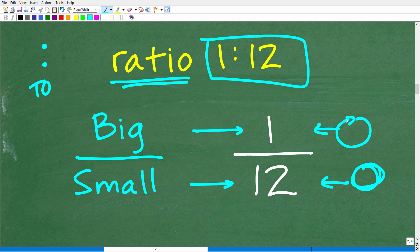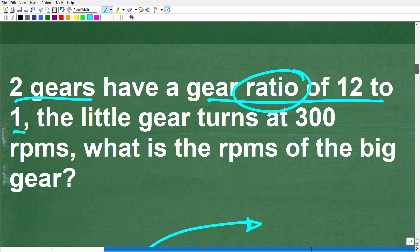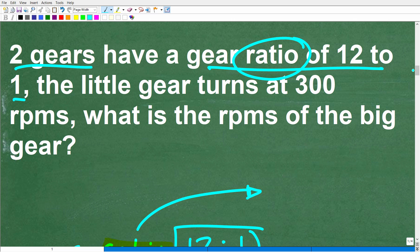Now that we have this ratio, what we want to do is set up a proportion. The question is, let's go back to the question. Now that we understand what a gear ratio is, the little gear turns 300 RPMs. What is the RPMs of the big gear?